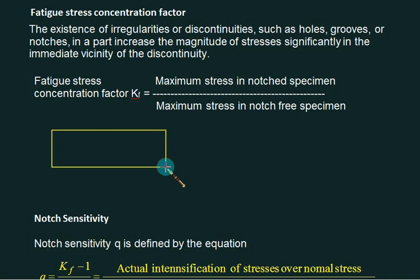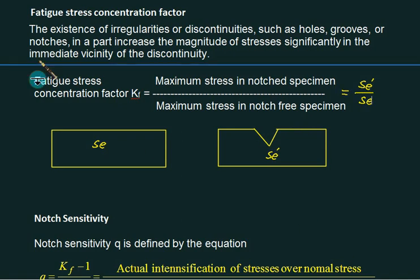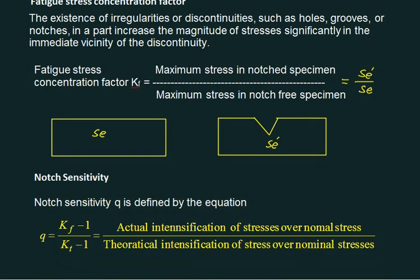Let us introduce here one more factor that is called as fatigue stress concentration factor. Fatigue stress which previously was theoretical. So we have two plates, identical plates. But in one plate we have a notch. So if this value is SE. If the stress lines for this one is parallel. And if the stress lines become constant here. So this value equal to SE dash. So fatigue stress concentration factor KF is defined as the maximum stress in a notch specimen. This is a notch specimen. To maximum stress in a notch free specimen. Notch free specimen. So this value equals to SE dash divided by. So it entirely depends what is your notch. And therefore we have to introduce one more term that is called as notch sensitivity. Which was defined as Q is equals to KF minus 1 upon KT minus 1. That is the actual intensification of stress is divided by the theoretical intensification of stress over normal stress.